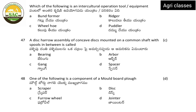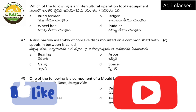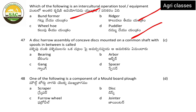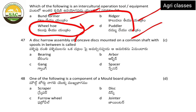Next question: which of the following is an intercultural operation tool? Options are bund former, ridger, wheel hoe, and dhammu. Intercultural operations include weeding, earthing up, and inter-row cultivation. The correct answer is wheel hoe.